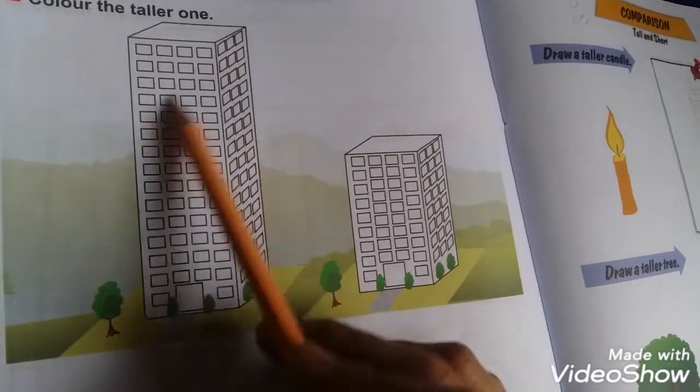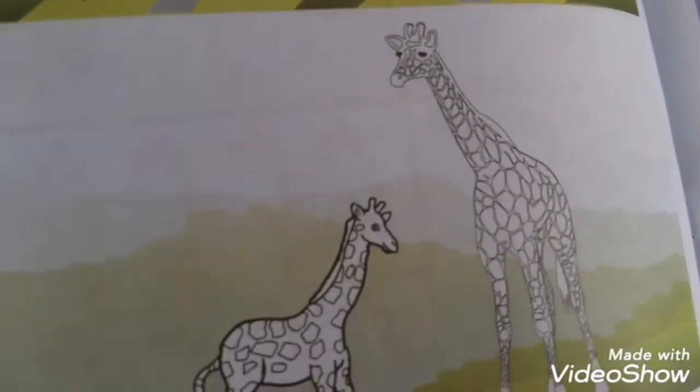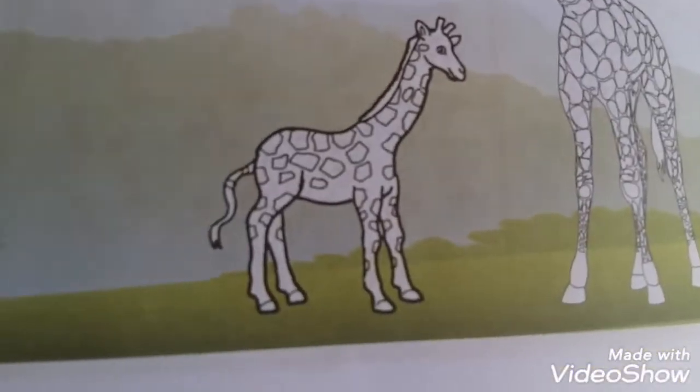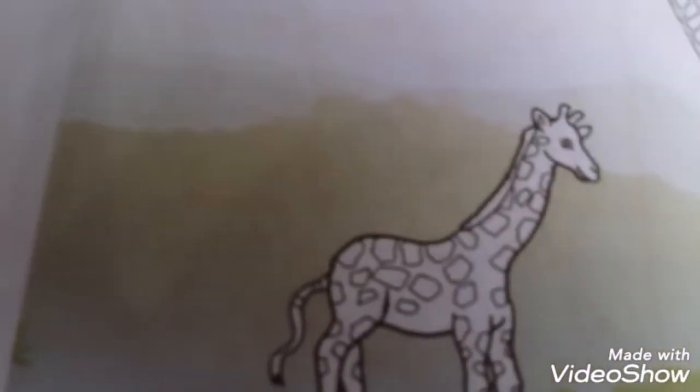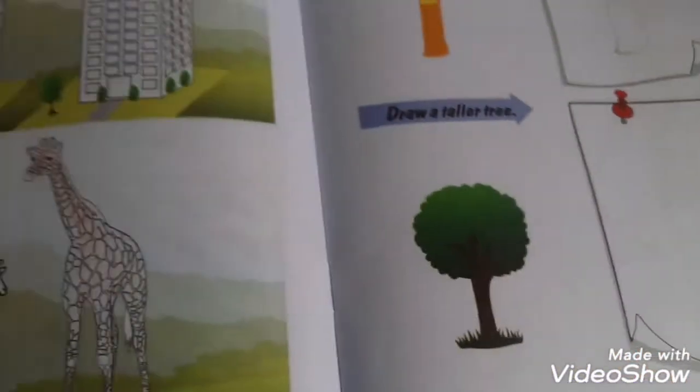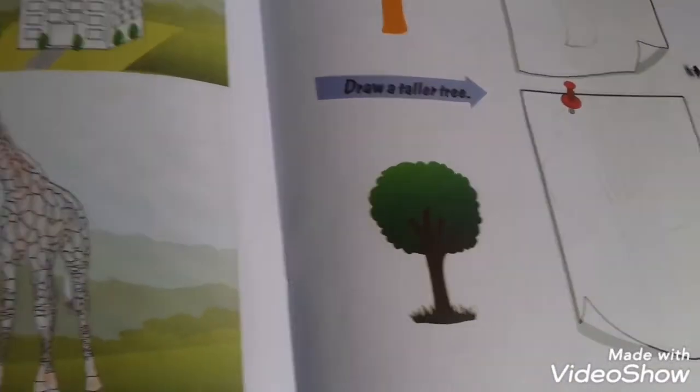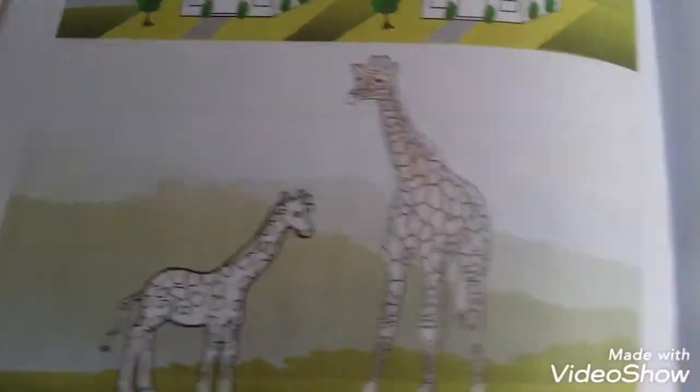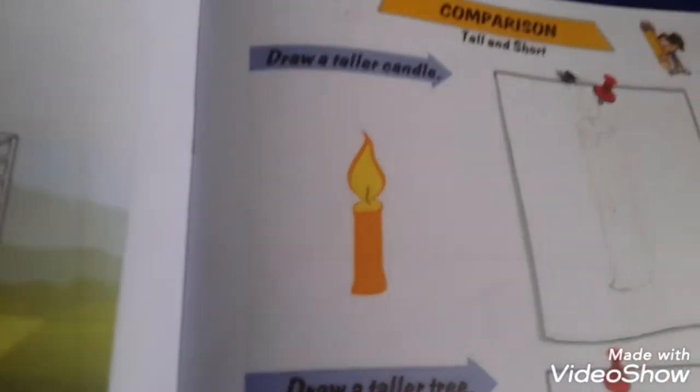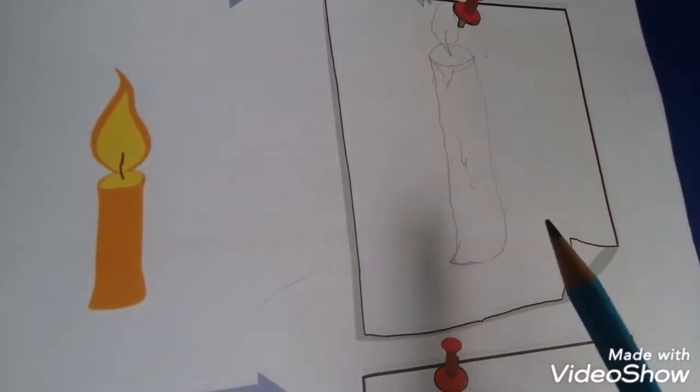Page number 17 - here mentioned tall and short, the same concept I explained on page 16. Here it says draw a taller candle. This is a shorter one. You draw a taller candle. I draw here a taller candle. This is the taller one.